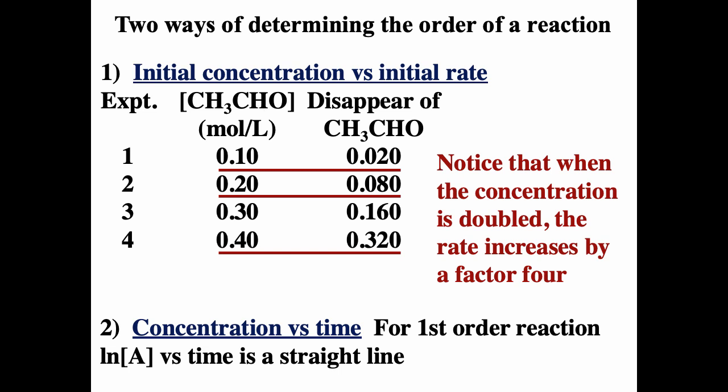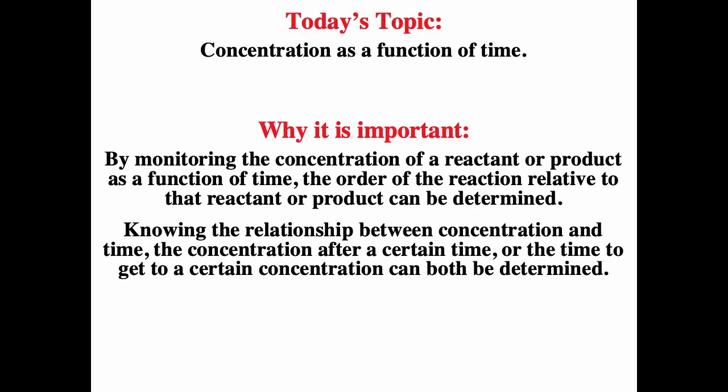Another way is by looking at the concentration as a function of time. For a first order reaction, the natural log of the concentration as a function of time is a straight line — and this is only true for a first order reaction. By monitoring the concentration of a reactant or a product as a function of time, the order of the reaction relative to that reactant or product can be determined. Knowing the relationship between concentration and time, the concentration after a certain time or the time to reach a certain concentration can also be determined.